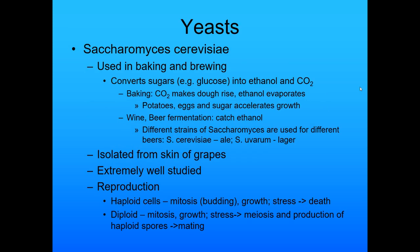One of the most famous yeasts is Saccharomyces cerevisiae, which is used in baking and brewing. It takes sugars like glucose and turns them into ethanol and CO2. In baking, the CO2 makes the dough rise while the ethanol evaporates. In wine and beer fermentation, you end up catching the ethanol. With fermentation, you can't get higher than about 12 or 13% alcohol because after that it kills the yeast — so higher percentage alcohol has to be done with distilling.